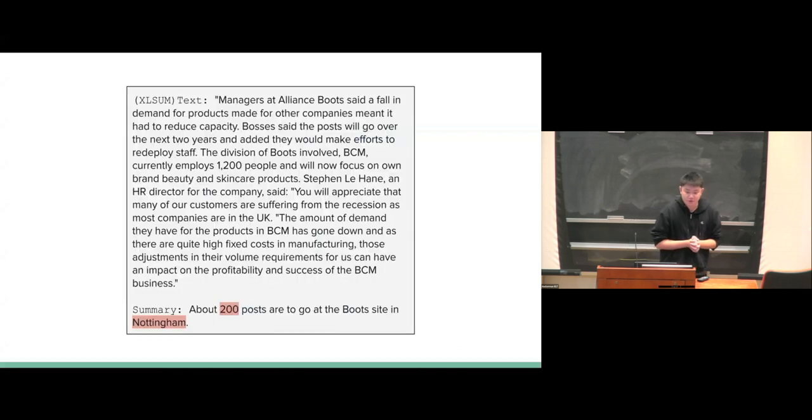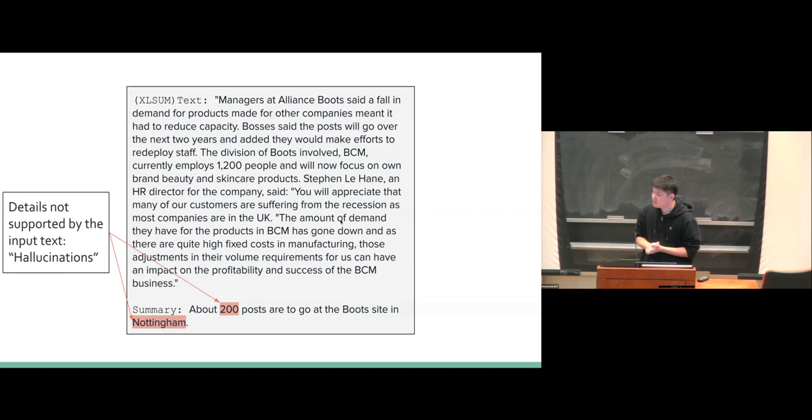Let's begin with a close inspection of our data. This is from a summarization dataset, XLSum. In the summary, it says that about 200 posts are to go at the boot site in Nottingham. However, I've highlighted some details in the summary that are not well supported by the input passage. There's no evidence that there are actually 200 posts and this event occurred in Nottingham. There are some details that are not supported by the input text. We call them hallucinations.